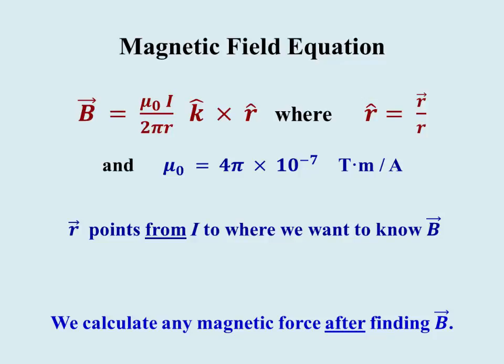Here's the equation we're going to evaluate. Mu naught over 2 pi r k cross r hat, where r hat is r vector over r, and mu naught is the constant 4 pi times 10 to the minus 7 tesla meters per ampere. And again, r vector points from the current to where we want b. If there's a force that we need to calculate later on, that is done as a separate problem. Always calculate the magnetic field b first at the point where the force would be applied, then calculate the force on some particle or current at that point. Two separate problems.